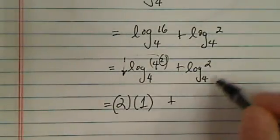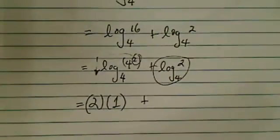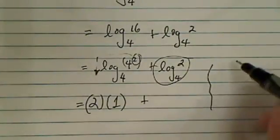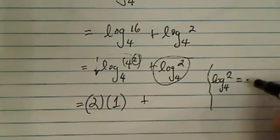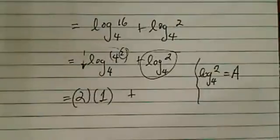Plus this chunk. What do I do with this chunk? The answer to this chunk is actually half. But let's see how we get there. Log base 4 of 2, let's have this number equal to a. We don't know this a yet.